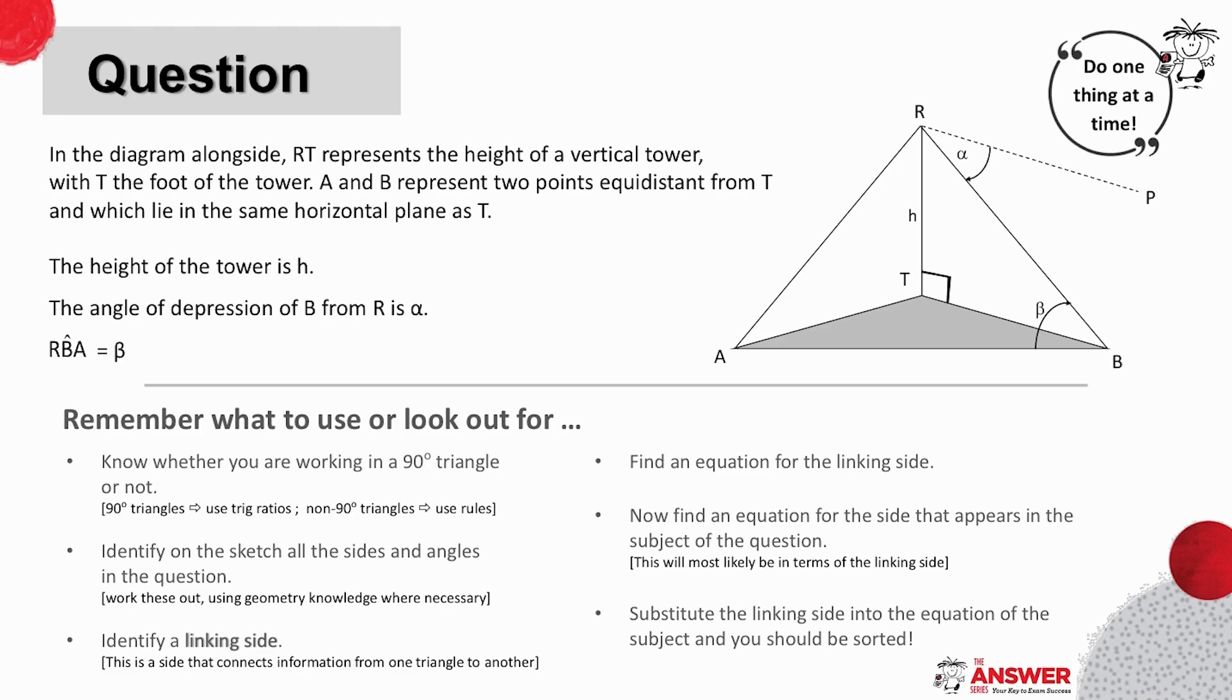This is a 3D example, where it tells you that RT represents the height of a vertical tower. As soon as you read about the height of anything, you can assume that the object, in this case the tower, is at 90 degrees with the ground below it.